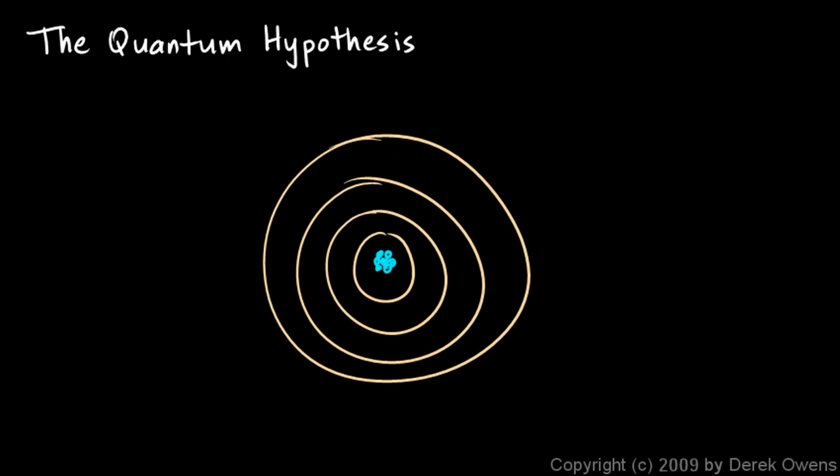An electron could be sitting here at this energy level, or it could be at the next highest energy level, but it never sits anywhere in between. When it moves from one energy level to another, it just goes and moves to the next one—it doesn't exist at any intermediate states in between. It just ceases to exist at one energy level and suddenly starts to exist at another.